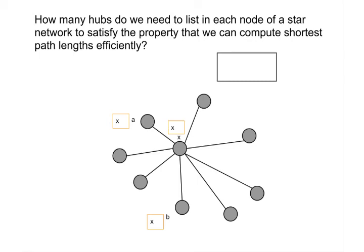and then we still should be fine. We'll get the distance from A to X is going to be whatever the distance from A to X is, plus zero. So one is the answer I was looking for.